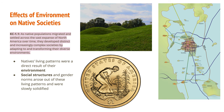We're starting with the effects of environment on native societies. The key concept is: as native populations migrated and settled across the vast expanse of North America over time, they developed distinct and increasingly complex societies by adapting to and transforming their diverse environments. Natives' living patterns were really a direct result of their environment — that's the causation. The Aztecs were living in that marshy area in the middle of Lake Texcoco and adapted to it. The use of agriculture and the division of labor yielded by agriculture led to more solidified gender roles.